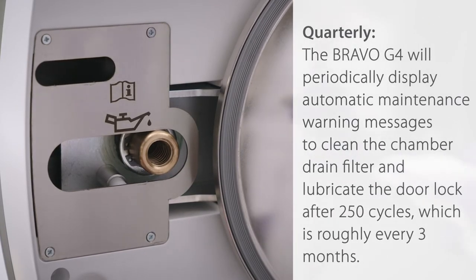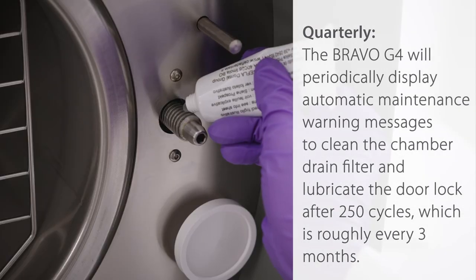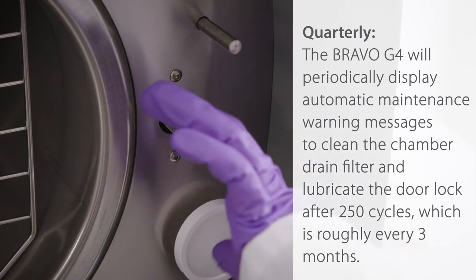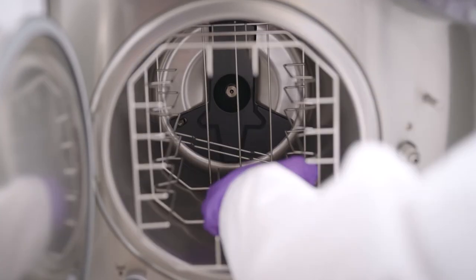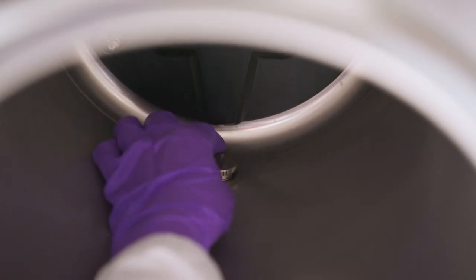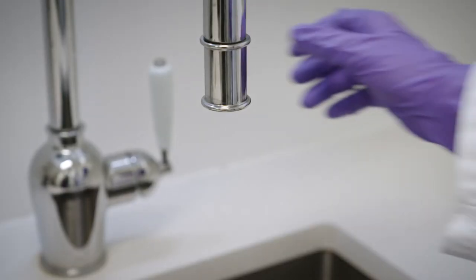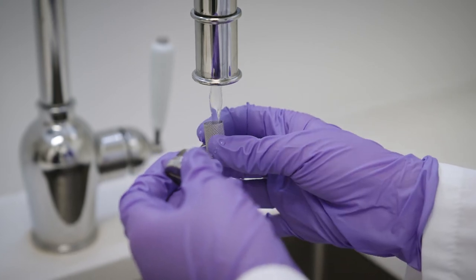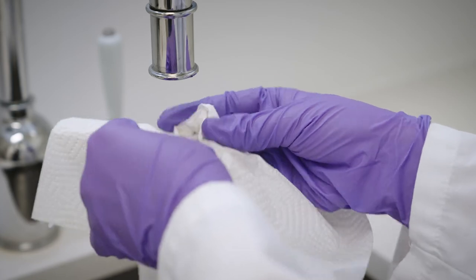Quarterly, the Bravo G4 will periodically display automatic maintenance warning messages to clean the chamber drain filter and lubricate the door lock after 250 cycles, which is roughly every three months. To clean the drain filter, open the sterilizer door and remove the cap using a coin or flat-bladed tool. Loosen the union that contains the filter. Remove the filter from its support and thoroughly clean it under a jet of running water, and if necessary use a sharp tool to remove any large foreign bodies. If available, use a jet of compressed air to remove debris from the filter.